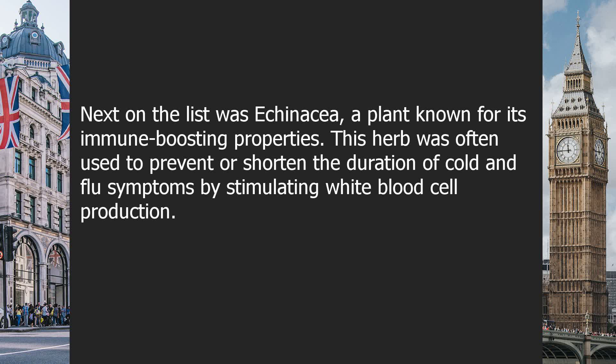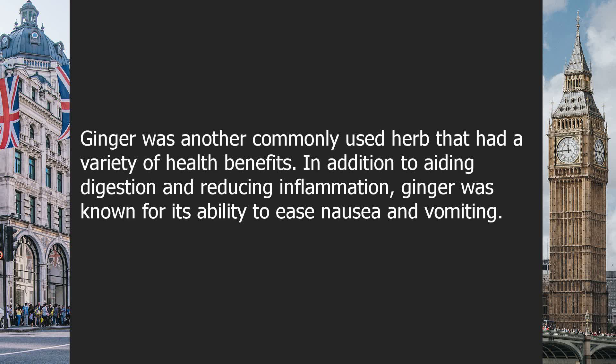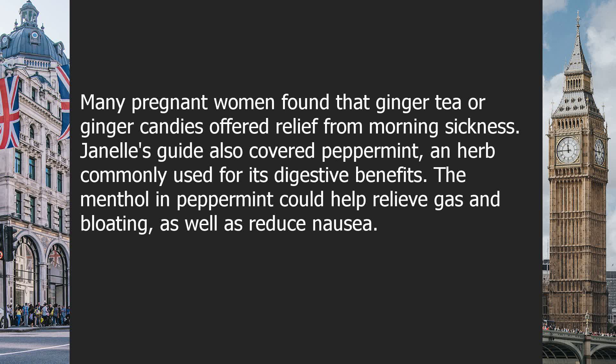Next on the list was echinacea, a plant known for its immune-boosting properties. This herb was often used to prevent or shorten the duration of cold and flu symptoms by stimulating white blood cell production. Ginger was another commonly used herb with a variety of health benefits. In addition to aiding digestion and reducing inflammation, ginger was known for its ability to ease nausea and vomiting. Many pregnant women found that ginger tea or ginger candies offered relief from morning sickness.